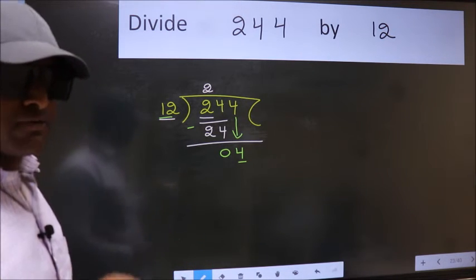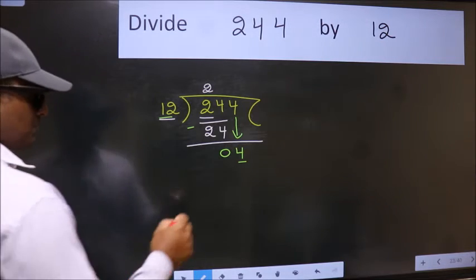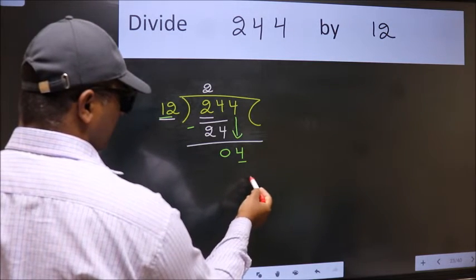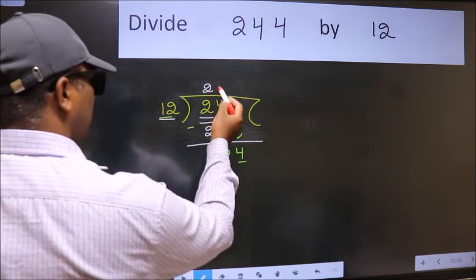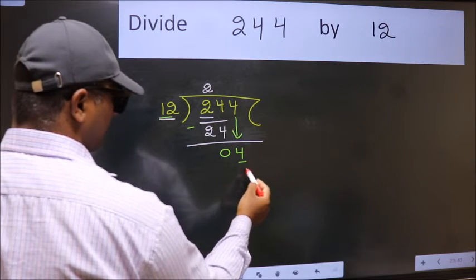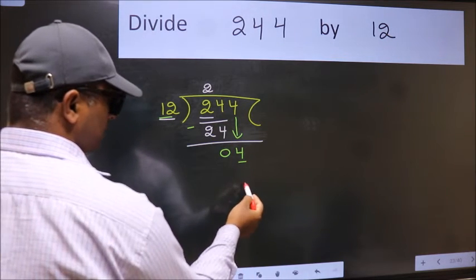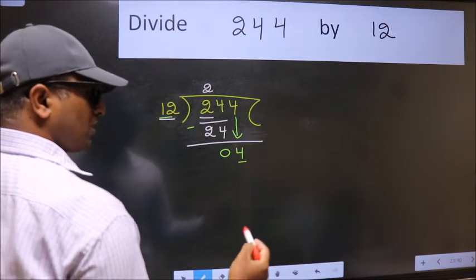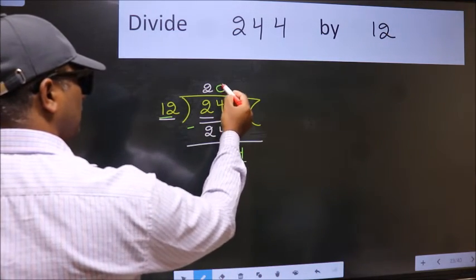Instead of that, what we should think of doing is which number should we take here. If I take 1, we will get 12. But 12 is larger than 4. So what we do is we take 0 here.